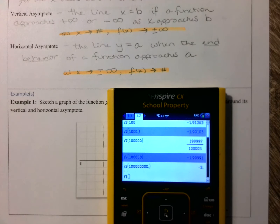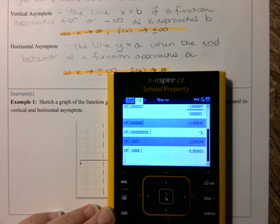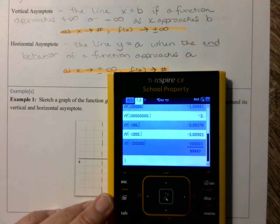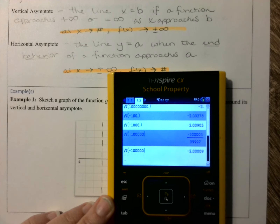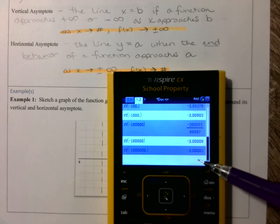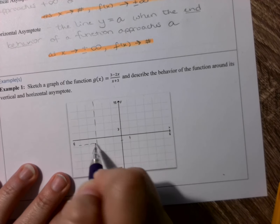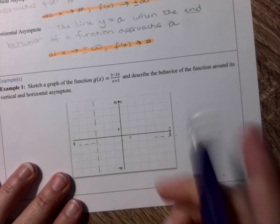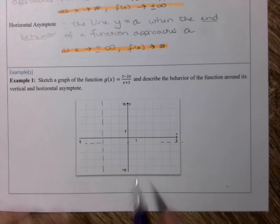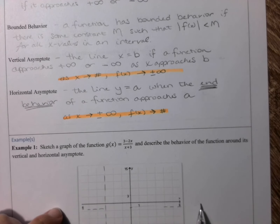Now let's do the same thing going to negative infinity. Plugging in negative 100 gives negative 2.09. Plugging in negative 1,000, negative 100,000, and even larger negative values — these numbers are also getting closer and closer to negative 2. So on my graph, I'm going to draw in that horizontal asymptote at y equals negative 2. When I draw a horizontal asymptote, I don't always draw it all the way across the grid because the horizontal asymptote is really just about the end behavior of the function — what those ends are doing out at positive and negative infinity.